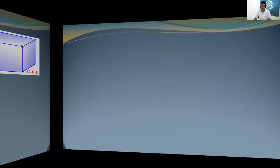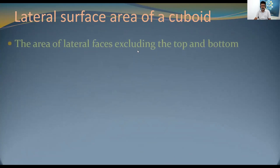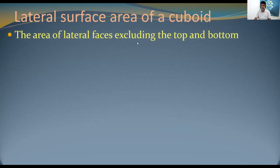Now let us look at lateral surface area of a cuboid. The lateral surface area is the area of the lateral faces, excluding the top and bottom faces. Total surface area includes all faces, whereas lateral surface area excludes the top and bottom two faces.